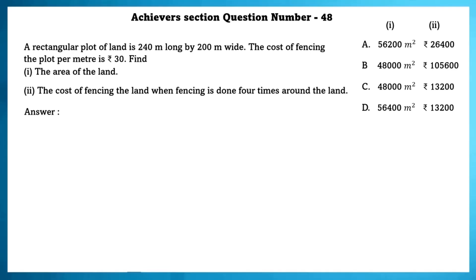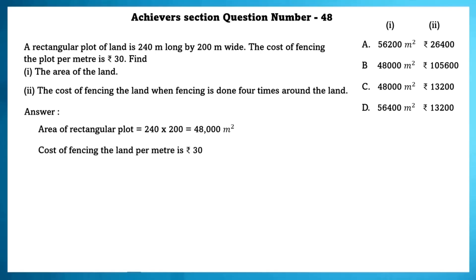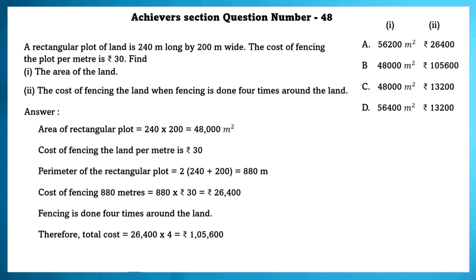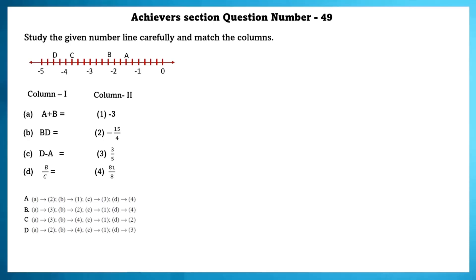Achieve A section question number 48. A rectangular plot of land is 240 meters long and 200 meters wide. The cost of fencing per meter is ₹30. Find the area of the land and the cost of fencing done four times around it. Area = length × breadth = 48,000 m². Perimeter = 880 meters, so cost of fencing once = ₹26,400. Fencing four times, the total cost = ₹1,05,600.